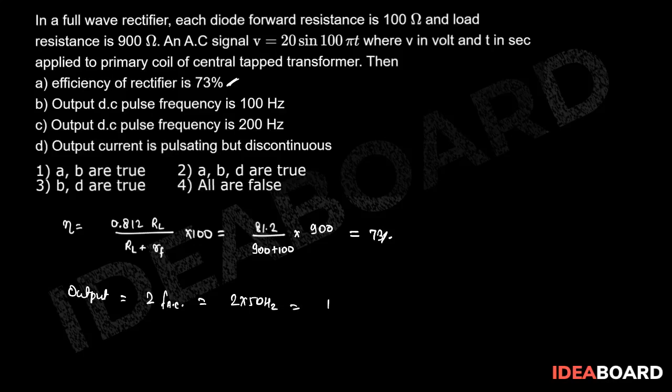If (b) is correct, then (c) is wrong. The output current is pulsating but continuous, not discontinuous, so statement (d) is also incorrect. Therefore, (a) and (b) are correct, making option 1 the correct answer to this problem.